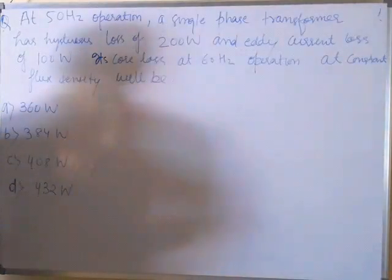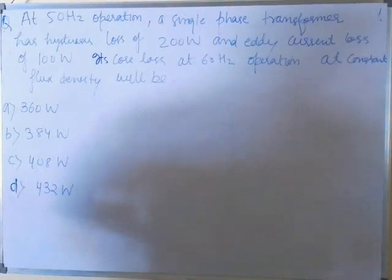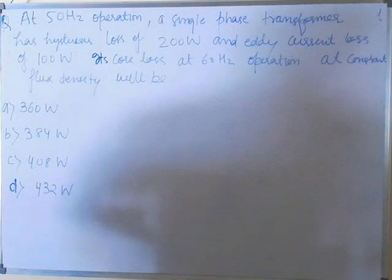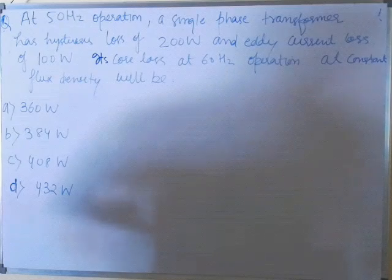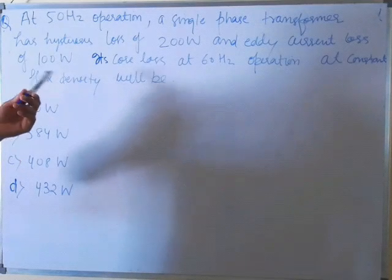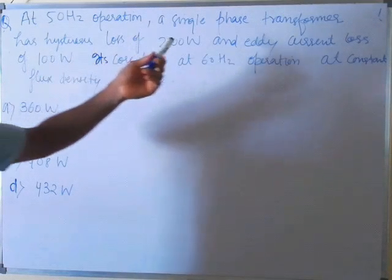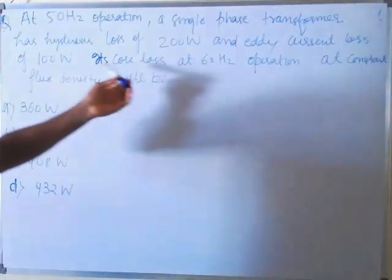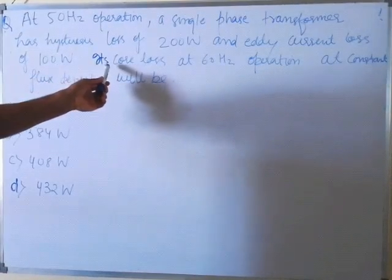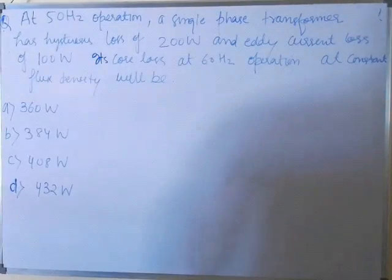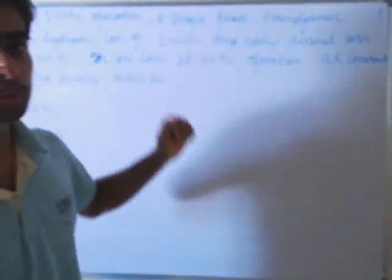Here a question is: at 50 Hz operation, a single-phase transformer has a hysteresis loss of 200 watt and eddy current loss of 100 watt. We need to find its core loss at 60 Hz operation at constant flux density — that is, what will be the hysteresis loss and eddy current loss at 60 Hz?